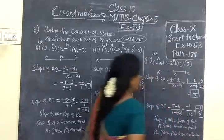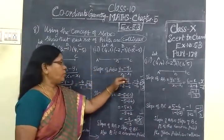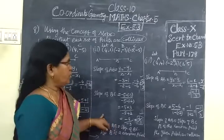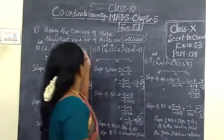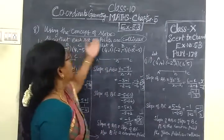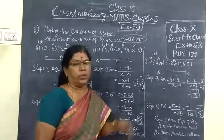For slope problems, it is very easy. We are just using the formula Y2 minus Y1 by X2 minus X1. In the next class, using this concept, we will prove points are collinear with one more condition. Thank you.